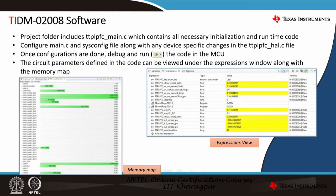Once your configurations are done, you can debug and run the code in the MCU. The circuit parameters defined in the code can be viewed under the expressions window as shown in the image. You can also see the memory map, which indicates how much memory is being occupied in the processor. You can enable the continuous refresh option in the expressions window, which gives a continuous update of all parameters you are sensing.